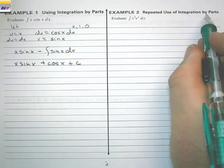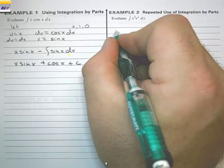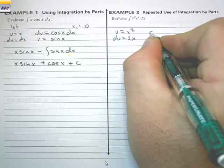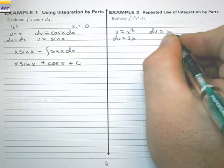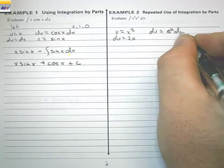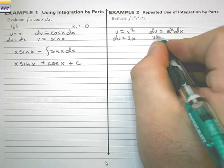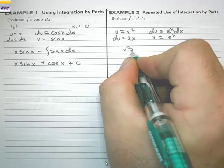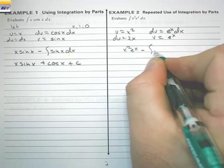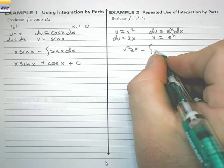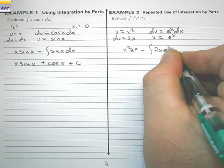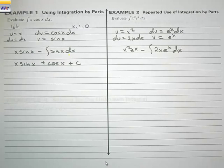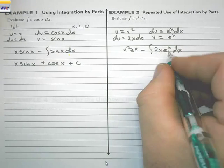Repeated use of integration by parts. We let u equal x², so du equals 2x dx, and dv equals eˣ dx, giving v equals eˣ. So we have u times v, which is x²eˣ, minus the integral of v du, which is the integral of 2x·eˣ dx. We don't know how to integrate that yet, so we repeat the process.